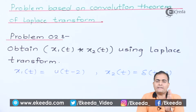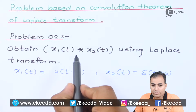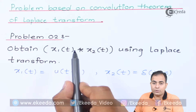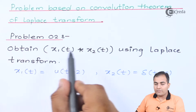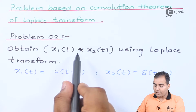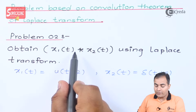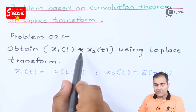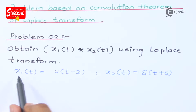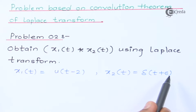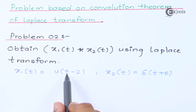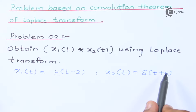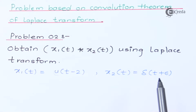Today's question is a little bit similar to Problem Number 1. Problem Number 2: obtain x1(t) convolved with x2(t) — a convolution sign is placed in this question — using Laplace transform, where x1(t) is u(t-2) and x2(t) is δ(t+6). In both parts the functions are time-shifted: x1 is delayed by 2 and x2 is advanced by 6. Whenever a function is time-delayed, we use the time-shifting property.